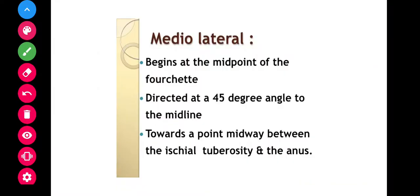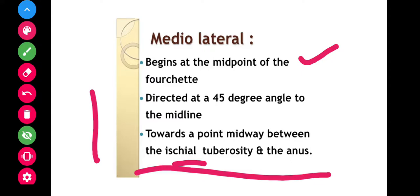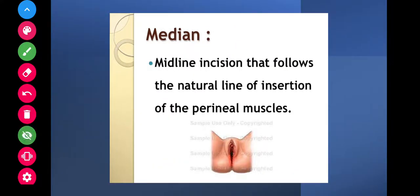Let us see what is this medial lateral. It begins at the midpoint of the fourchette directed at 45 degrees angle to the midline towards a point midway between the ischial tuberosity and the anus. And median is a midline incision that follows the natural line of insertion of the perineal muscles.